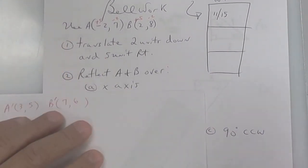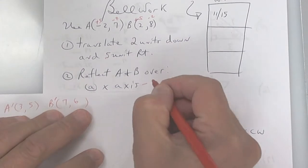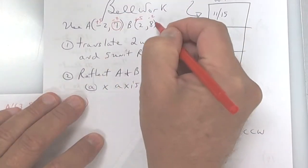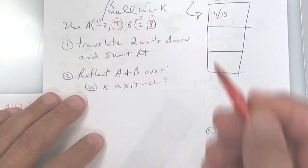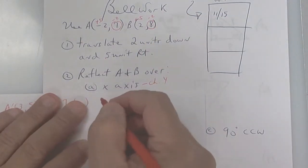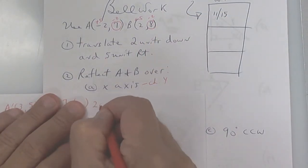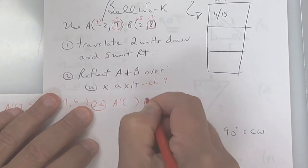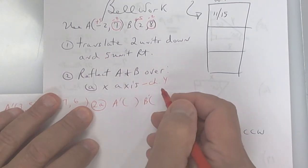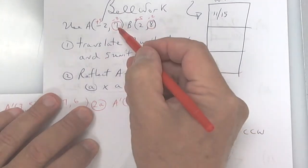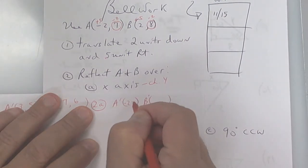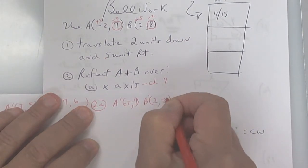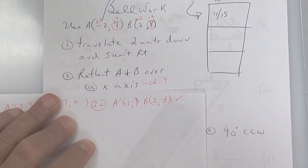The next one is reflect. Remember, if you reflect over the x-axis you change the y. So for 2a you're going to say A prime and B prime and change the y's — it's going to be negative two, negative seven, and two and negative eight.